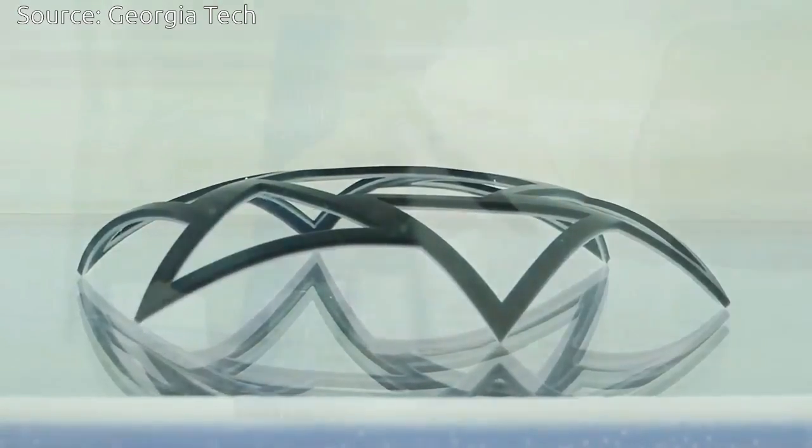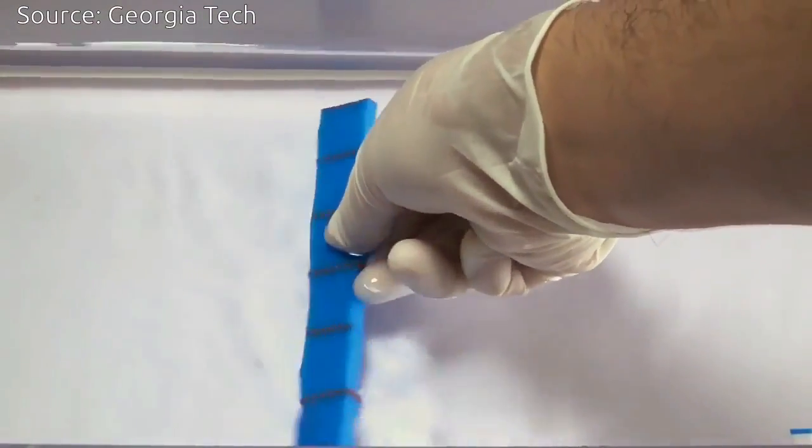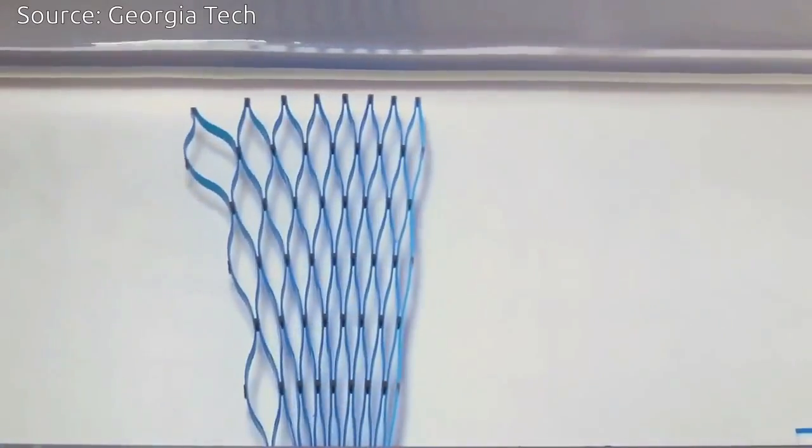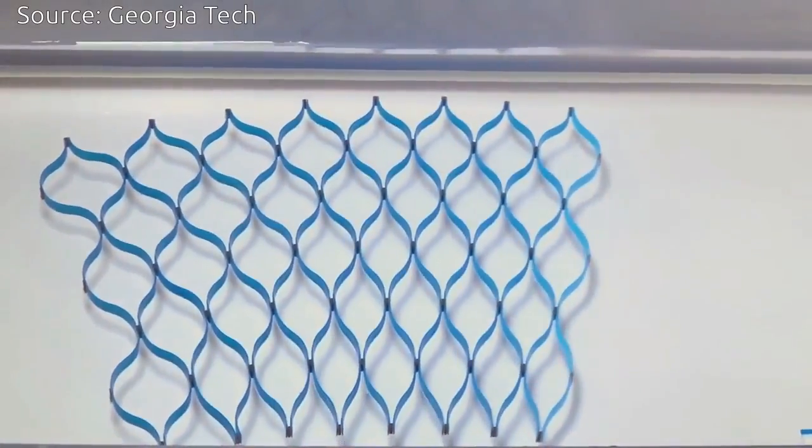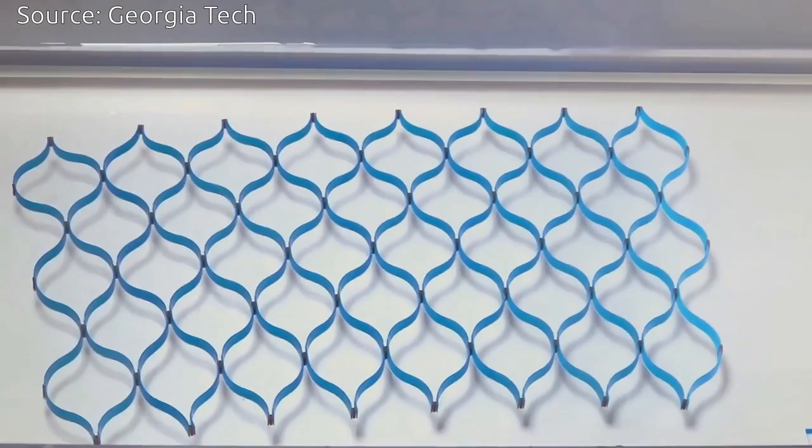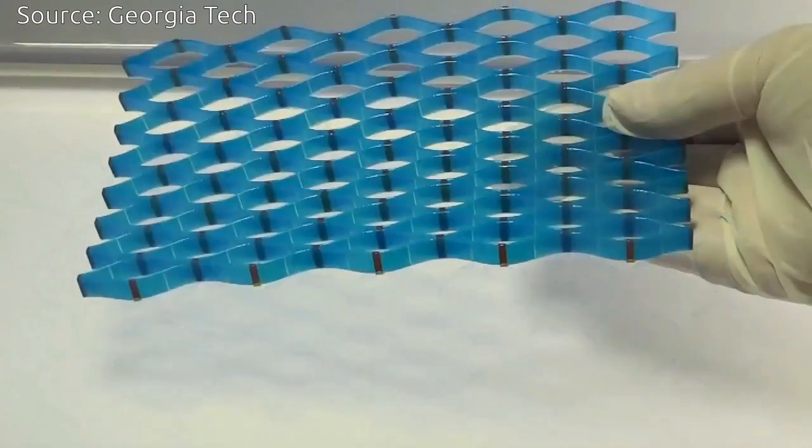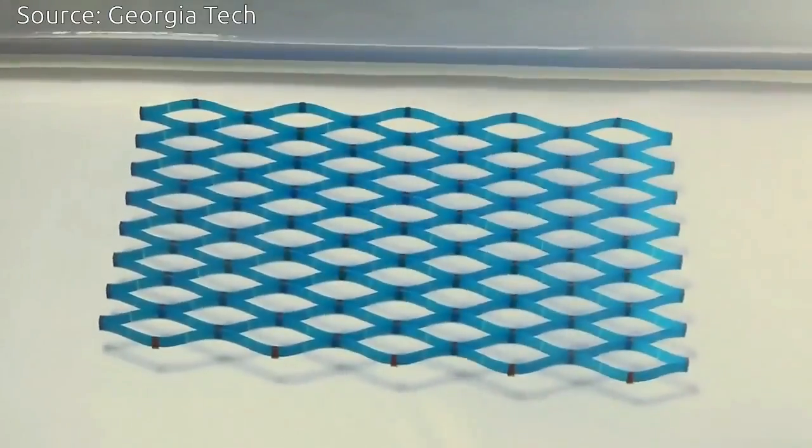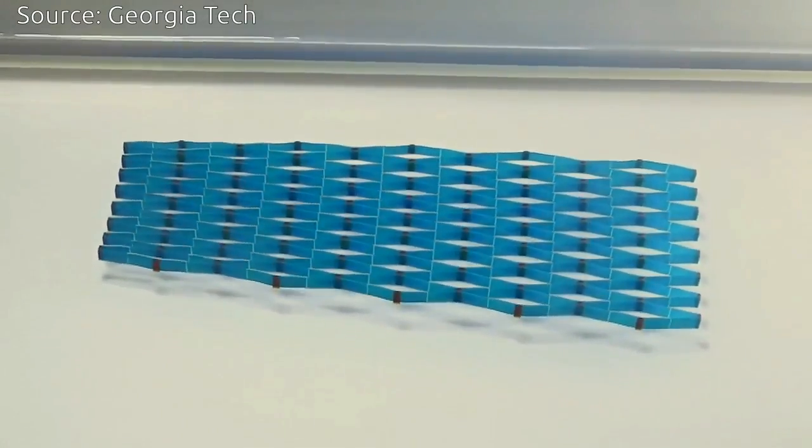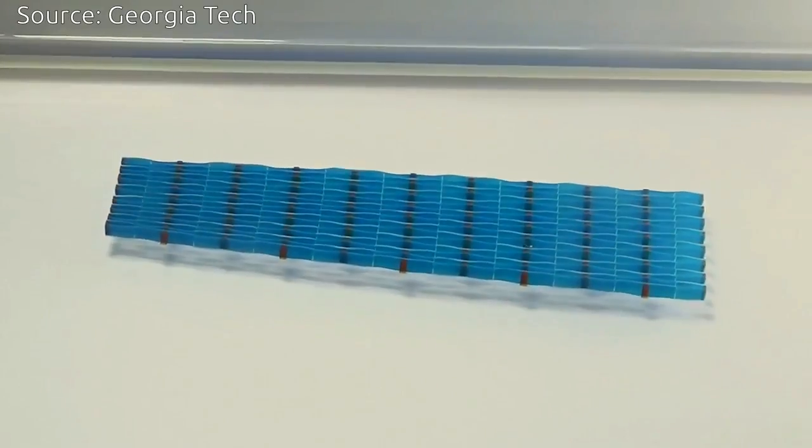The team created the objects by printing layers of shape memory polymers, with each layer designed to respond differently when exposed to heat. This new approach significantly simplifies and increases the potential of 4D printing by incorporating the mechanical programming post-processing step directly into the 3D printing process.